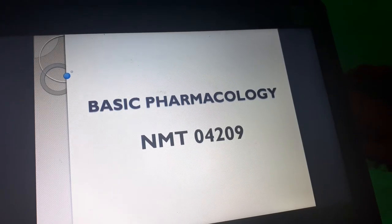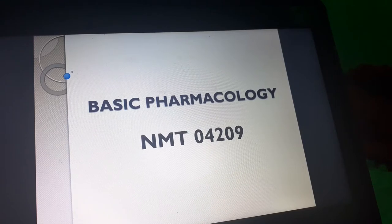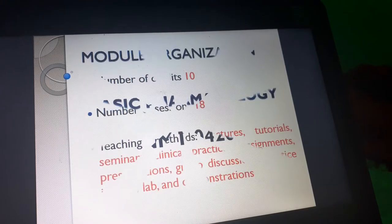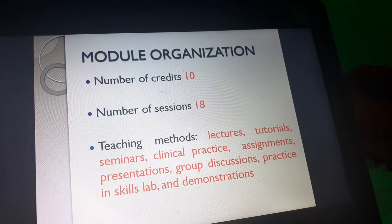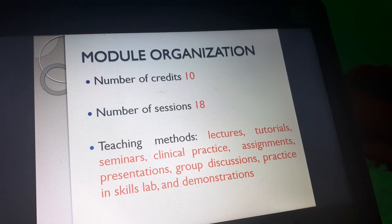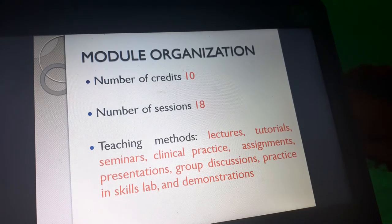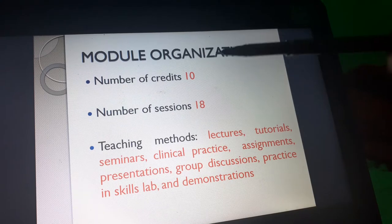Good morning everybody. Welcome today for the first session about basic pharmacology, module NEMT04209. The module has 10 credits, which is the fourth one in this semester. The first module is clinical nursing with 20 credits, followed by theories of nursing practice and disaster and emergency preparedness, which both have 13 credits. Then basic pharmacology with 10 credits.